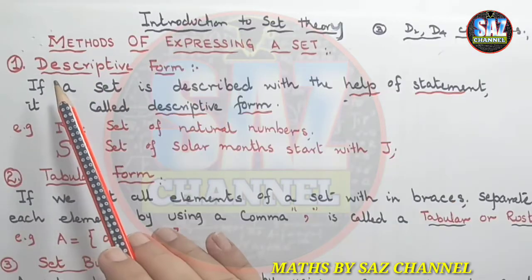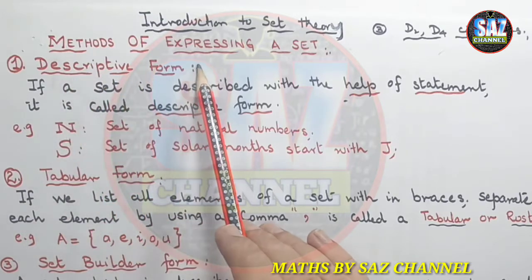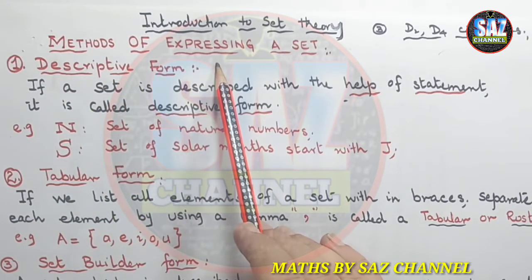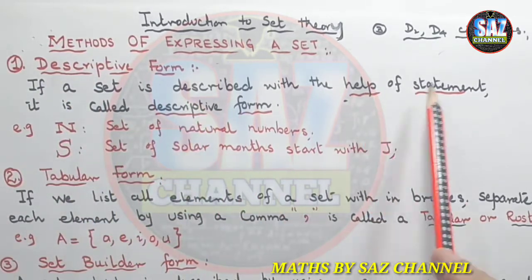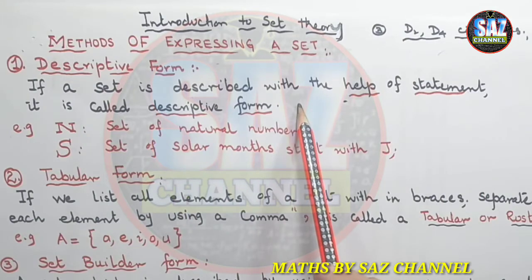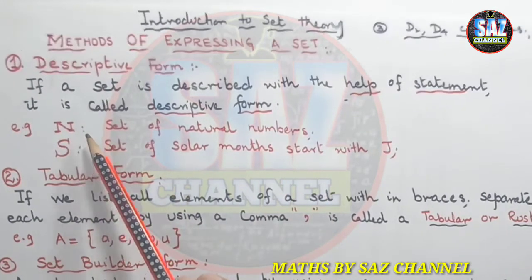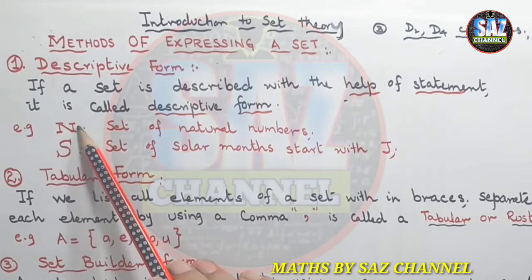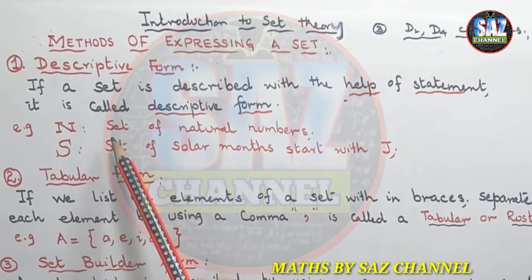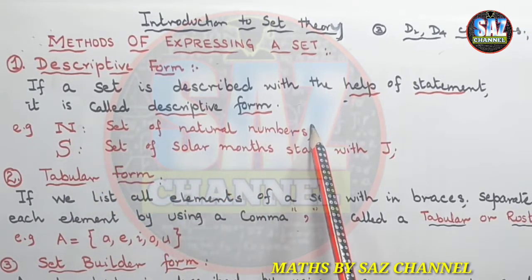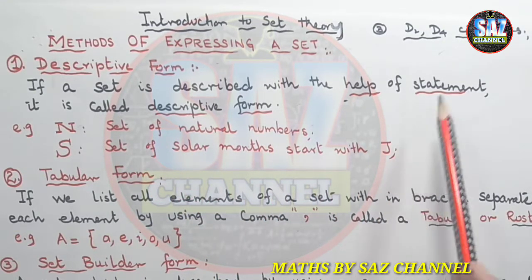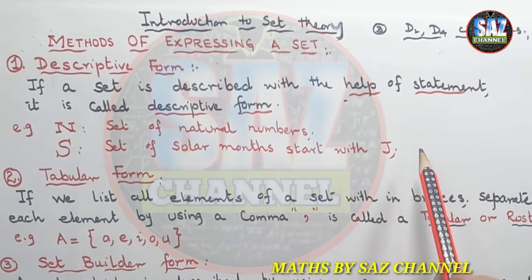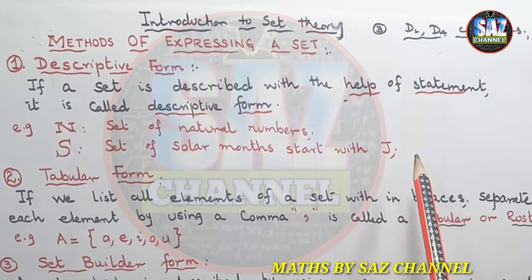The first method of writing a set is the descriptive form. If a set is described with the help of a statement, it is called the descriptive form. For example, N is the symbol for set of natural numbers, and we can describe a set as 'set of natural numbers,' 'set of solar masses that start with J,' 'set of vowels,' or 'set of tall boys in a class.' Here we are giving the description of these sets in the form of a statement.